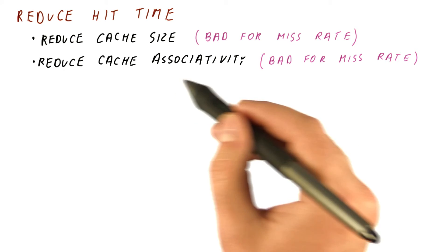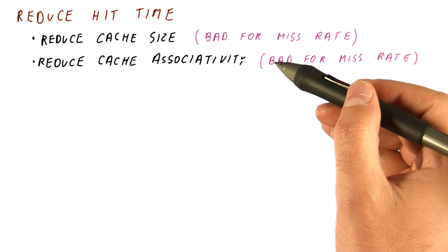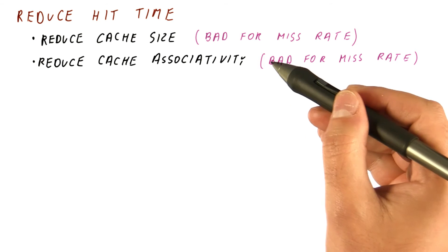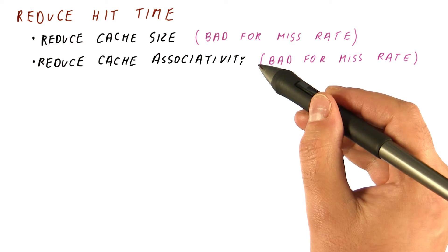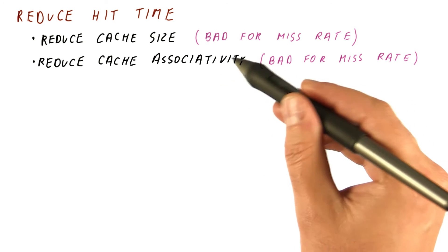For similar reasons, when we reduce associativity, we are creating more misses because blocks are going to start having conflicts and start kicking each other out, even though they might coexist peacefully in a more associative cache.